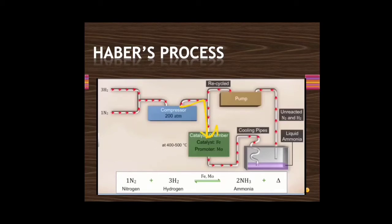In the catalytic chamber, finely divided iron is used as a catalyst and molybdenum is used as a promoter. A promoter helps the catalyst work better. The catalyst helps to speed up the reaction. The compressed mixture of nitrogen gas and hydrogen gas is sent to this catalytic chamber.